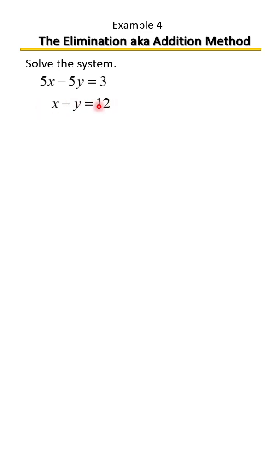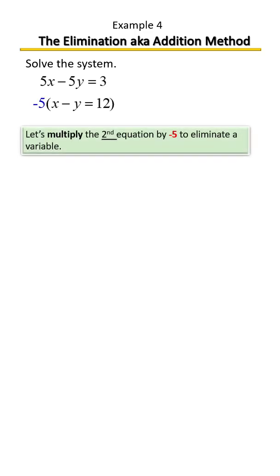So all we have to do with that second equation is to multiply it by negative five. We're going to go ahead and do that. We're not going to do anything to equation number one. We're going to do the distributive property with equation two: negative five times x, negative five times negative y, and negative five times positive 12.